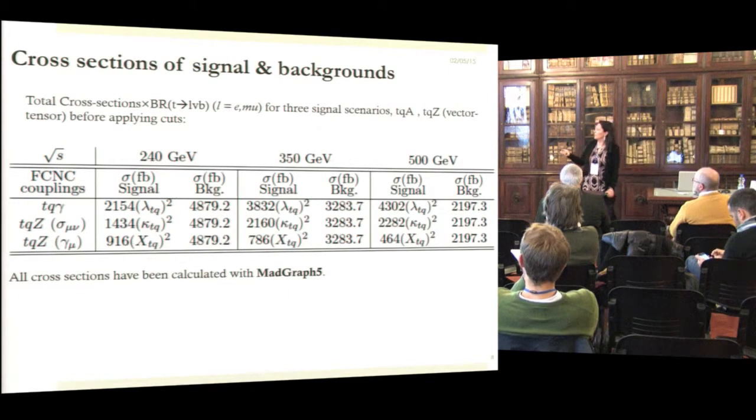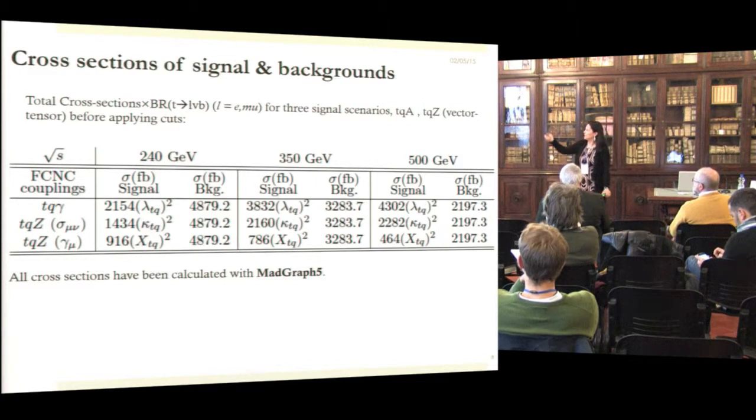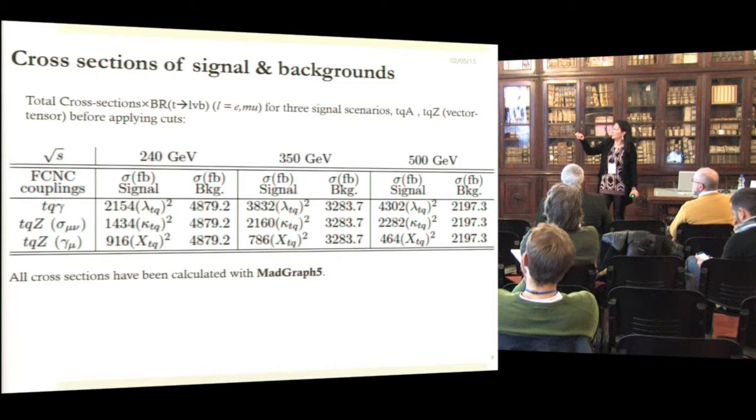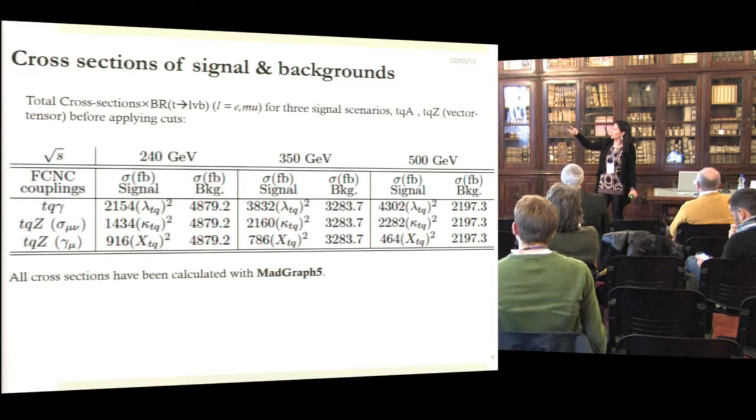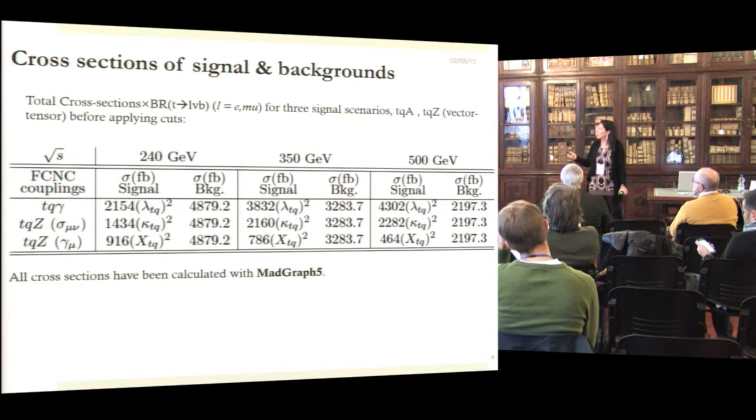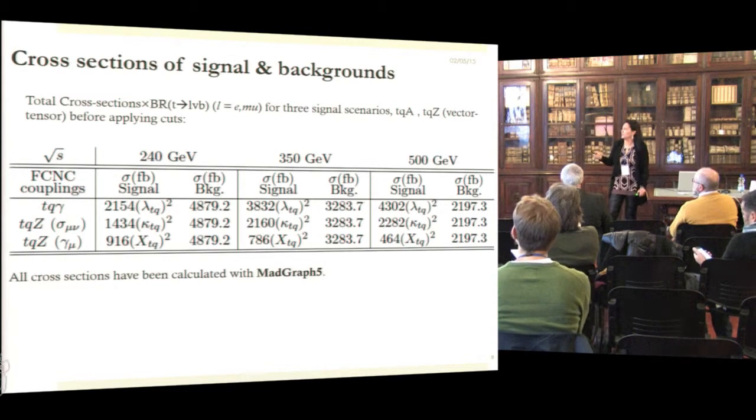This is a table of the cross-sections—total cross-section for signal and background. The cross-section for the signal depends on these anomalous couplings. This background is already the sum of the two backgrounds; at 350, 500 you have also the TT bar component, otherwise you have only the W plus jets.